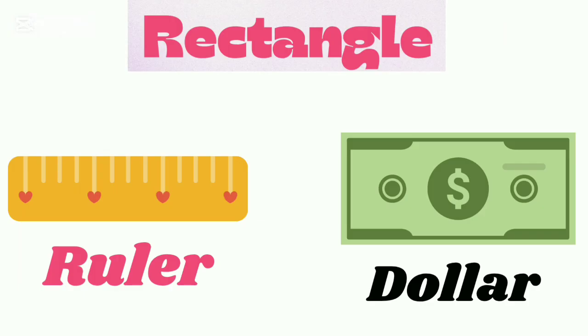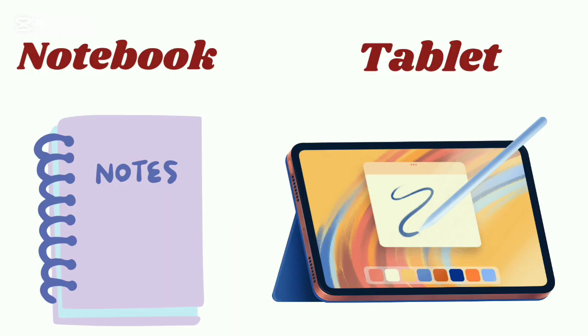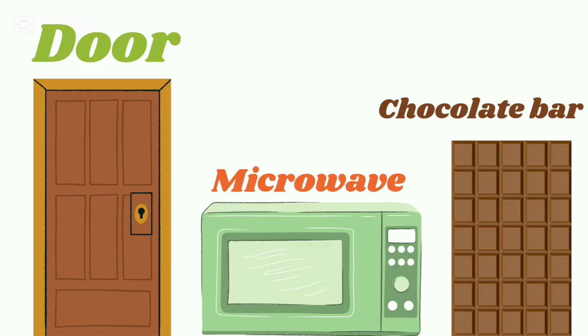Rectangular shape: ruler, dollar, notebook, tablet, door, microwave, chocolate bar.